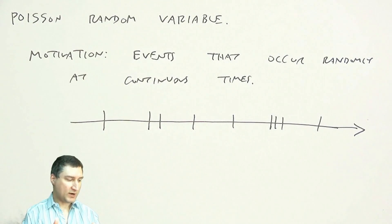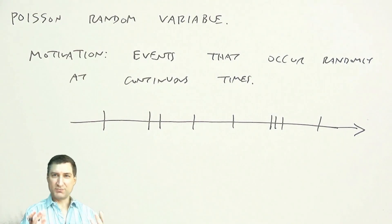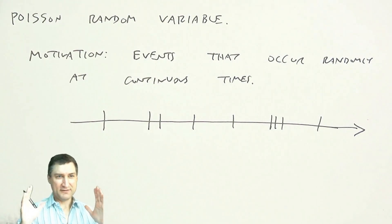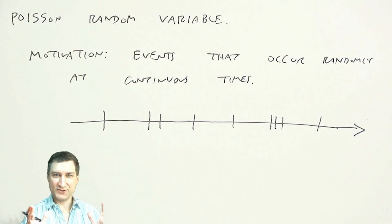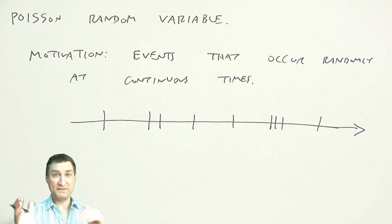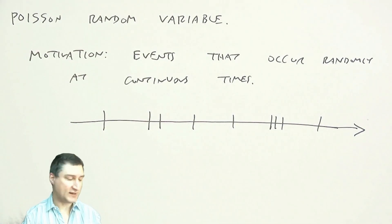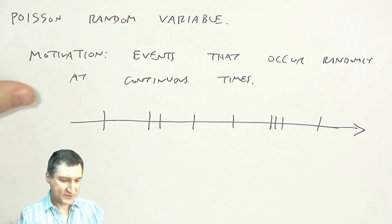Then I want to ask: what is the probability that I saw five customers arriving at my shop in a given 15-minute interval? We can use the Poisson random variable to answer this question.